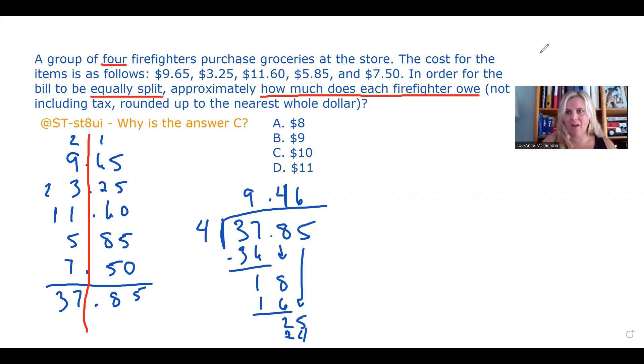You can see that line represents all of the decimals that are both in the list you're adding and in the answer itself. So you do your adding and you come up with $37.85. You're going to divide that by four. And when you do, you're going to get $9.46.